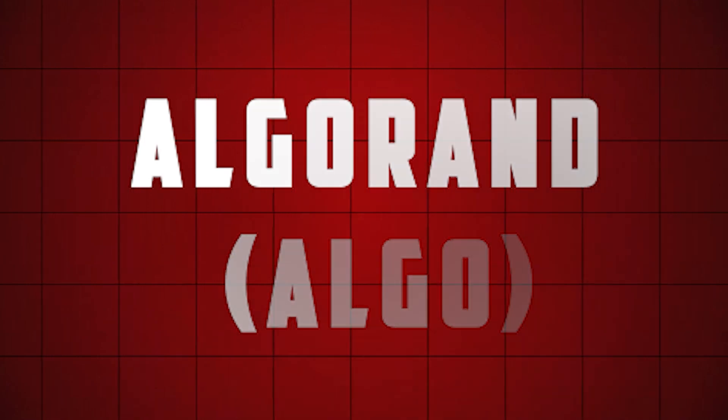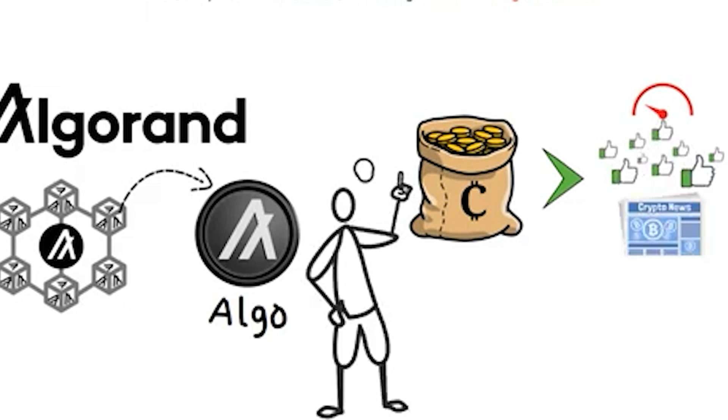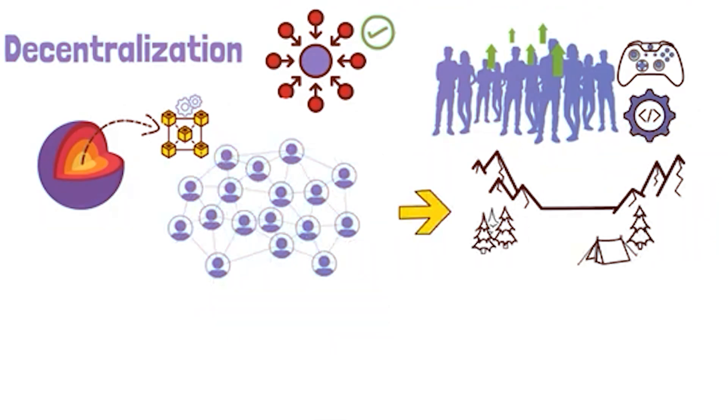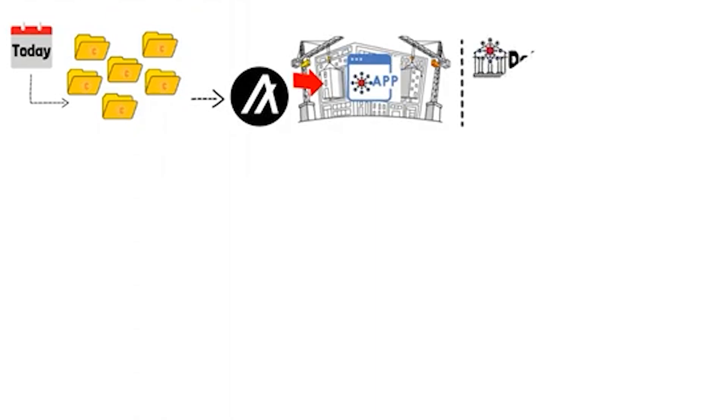ALGORAND, ALGO. ALGORAND excels in real-time payments and decentralized applications, blending speed and low fees. Its focus on asset tokenization has attracted large organizations, including partnerships for national digital currencies.